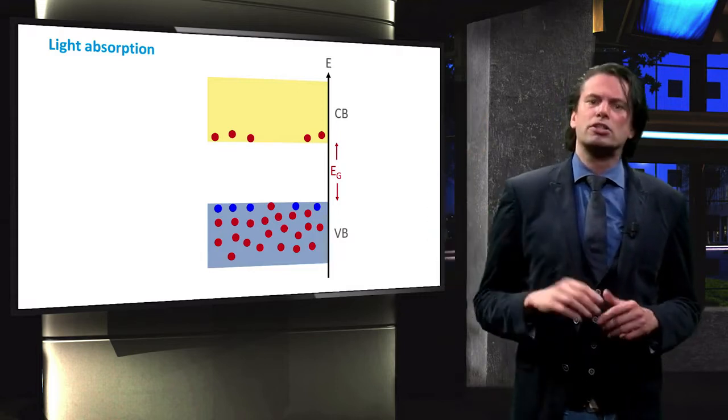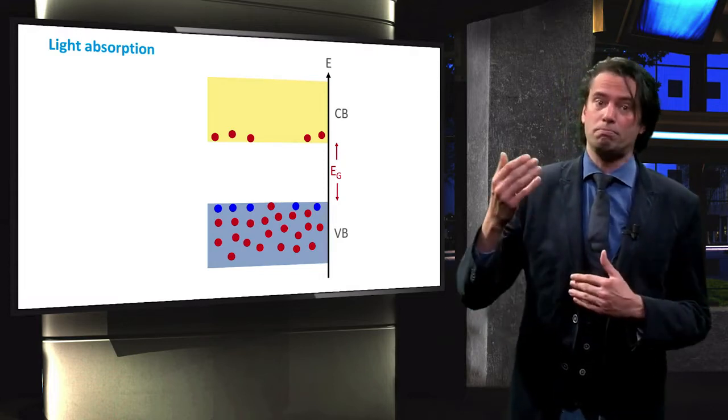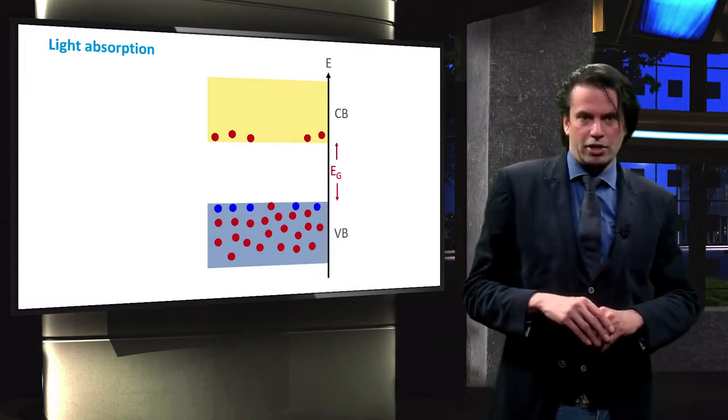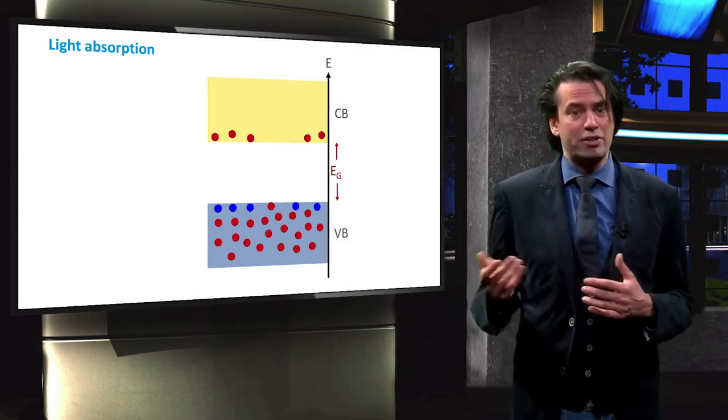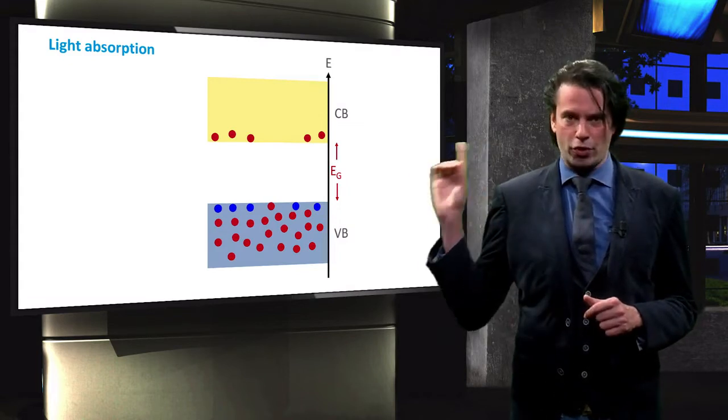The yellow box represents the conduction band, which contains the low energy levels of the unbound electrons. The space between the valence and conduction band represents the band gap. The green line is an incident photon.